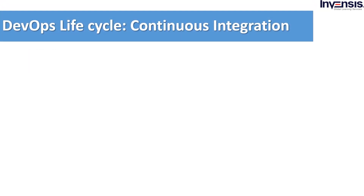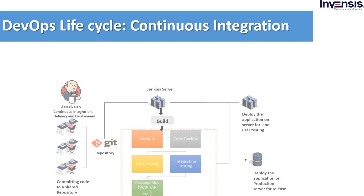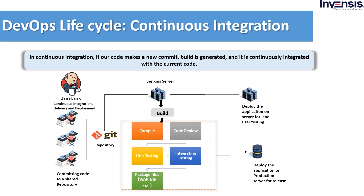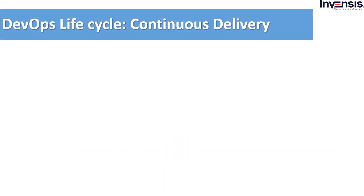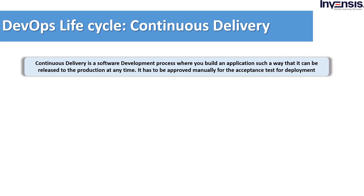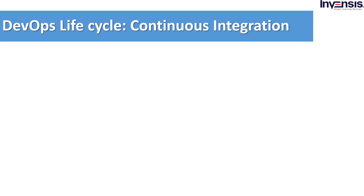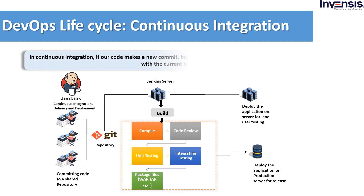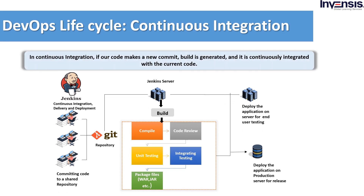Developers can update the local repository with new data coming from the central Git repository using push-pull commands. In this step, if our code makes a new commit, a build is generated and it is continuously integrated with the current code. The new code has to be merged with the latest one continuously as ongoing development continues, and the changed code should ensure there are no bugs in the current environment. The image illustrates continuous integration, which integrates different DevOps stages such as continuous development, continuous testing, continuous delivery, and continuous deployment.